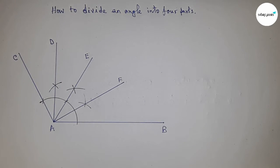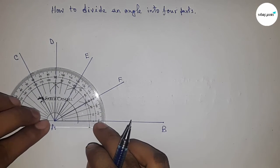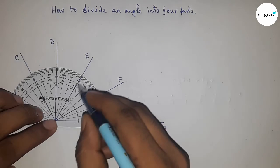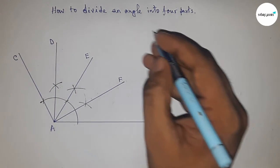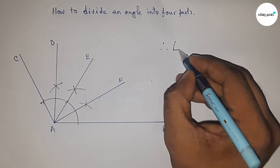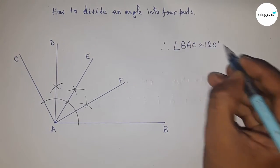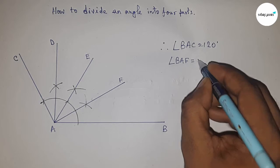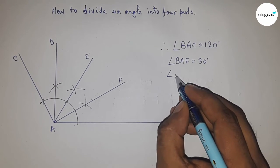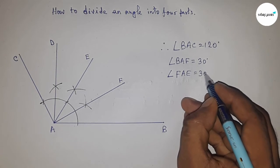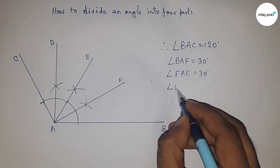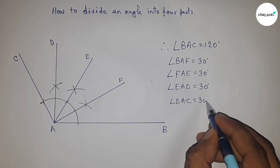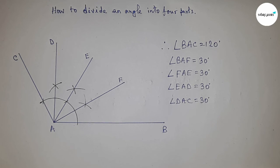Now checking whether it is correct or wrong. This is 30 degrees, this is 60 degrees, this is 90 degrees, and this is 120 degrees. Therefore, angle BAC equals 120 degrees, angle BAF equals 30 degrees, angle FAE equals 30 degrees, angle EAD equals 30 degrees, and angle DAC equals 30 degrees.